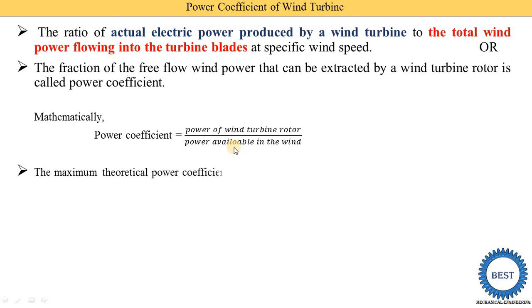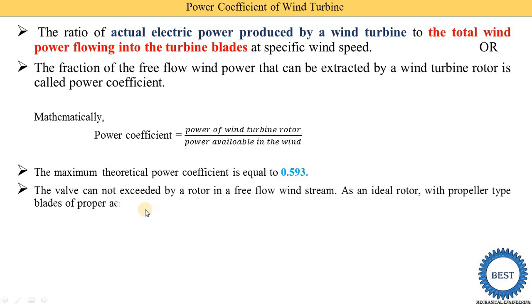The maximum theoretical power coefficient is equal to 0.593 means maximum efficiency for any wind turbine is 59.3% only. The value cannot exceed by rotor in a free flow wind stream as an ideal rotor with propeller type blade of a proper aerodynamic designs would have a power coefficient approaching 0.59.